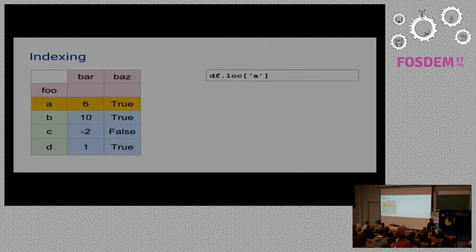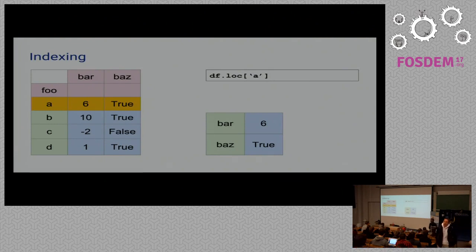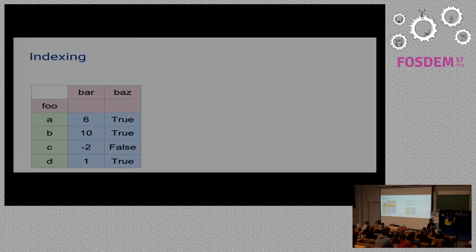To fetch a row, we can simply pass the name of the row — now a character like A, because it's the content of the index. You will get a series where values are only 6 and true, and the columns will again become the index. If you still want to use row numbers, you can use iloc — the integer location — for fetching rows as before.